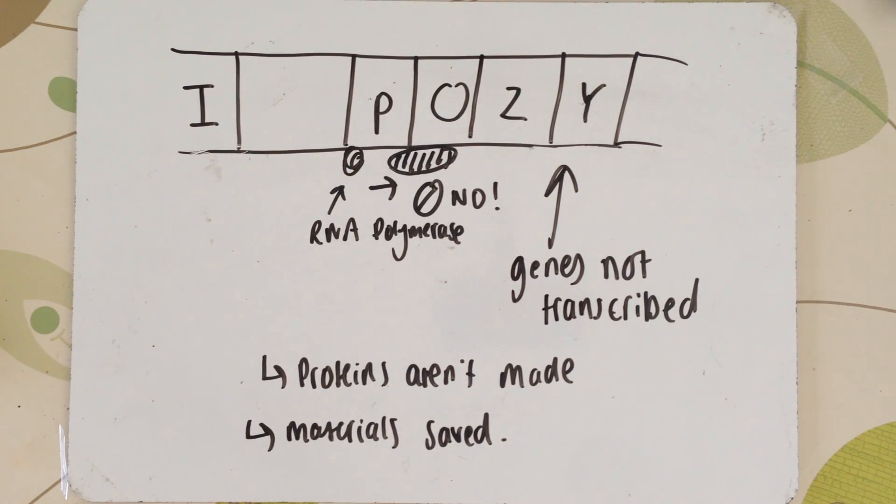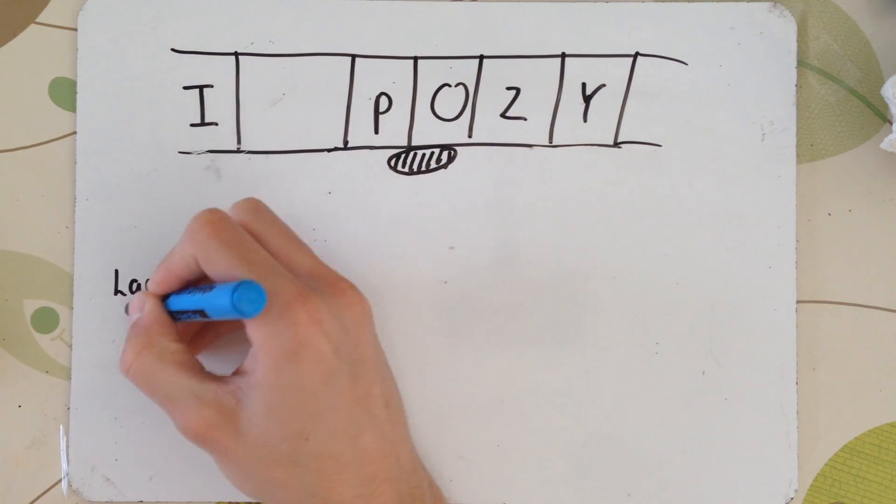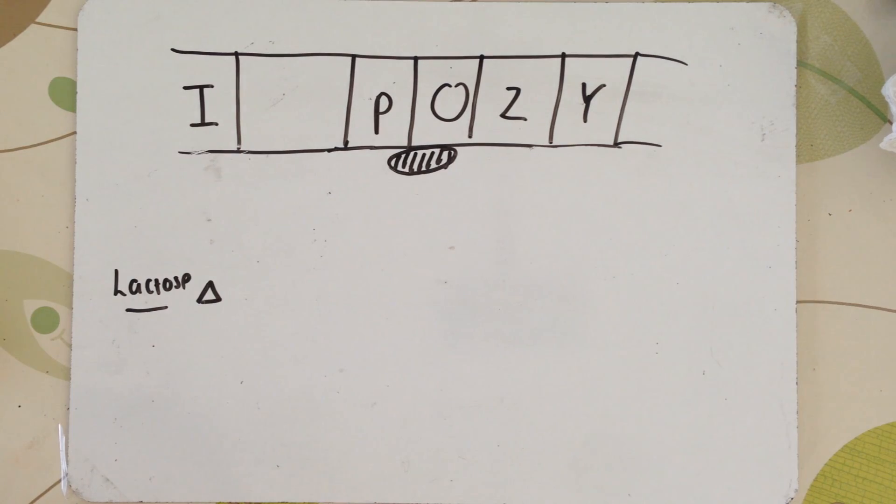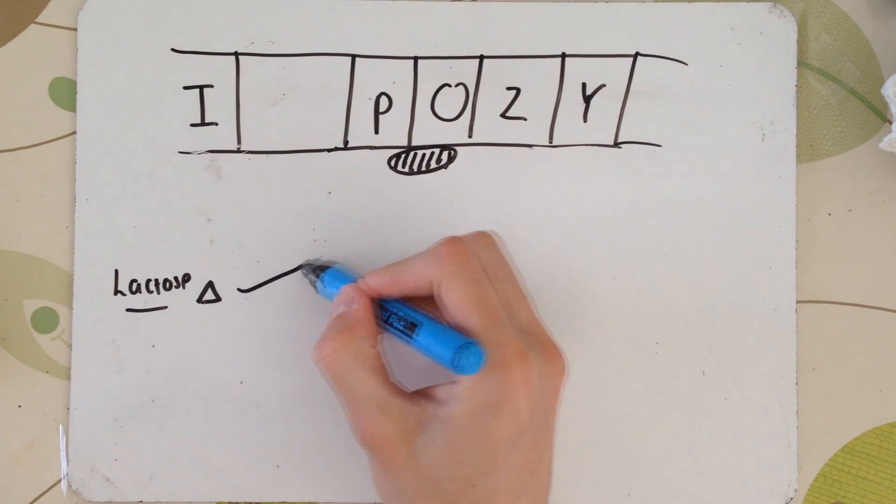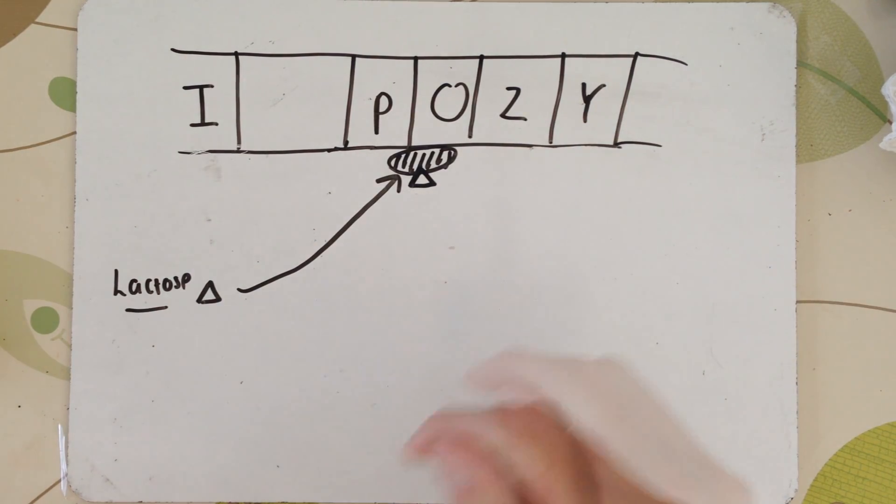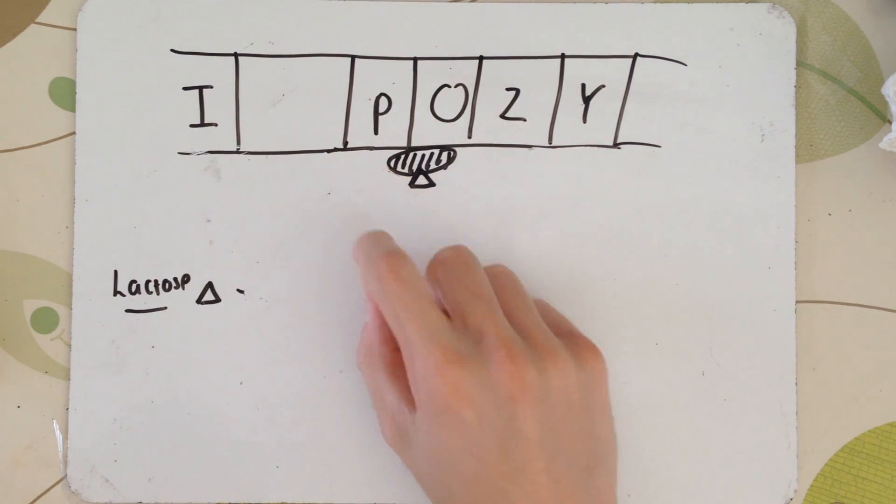So, this is actually beneficial to the cell in saving materials. However, if the yeast or the E. coli or the cells that we're talking about are transported to a different medium, such as the lactose medium, say they're normally grown in glucose, they can respire glucose, they're transferred to lactose. Now, a few of these lactose molecules will diffuse into the cell.